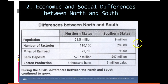The number of factories — remember we talked about the Industrial Revolution a few weeks ago — there were five times as many factories in the North. The amount of railroads: nearly three times as many railroads in the North compared to the South.